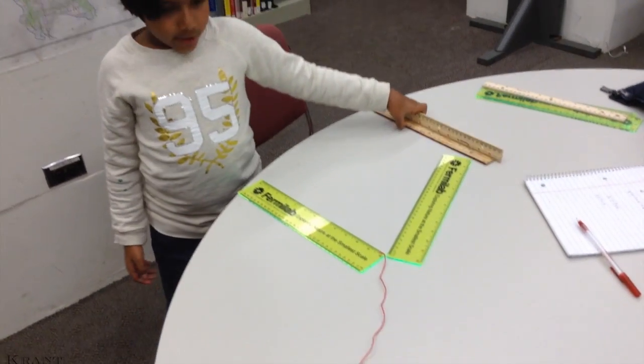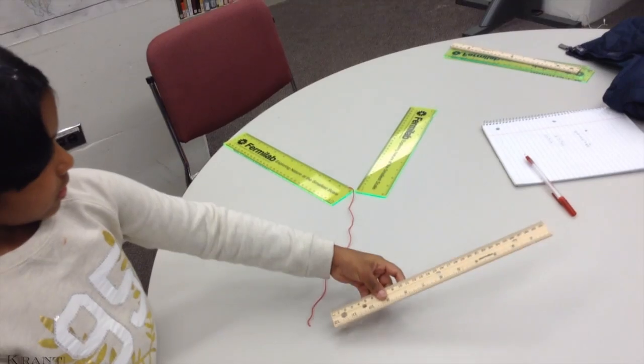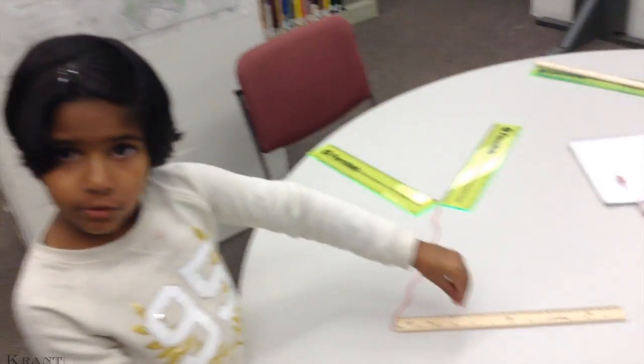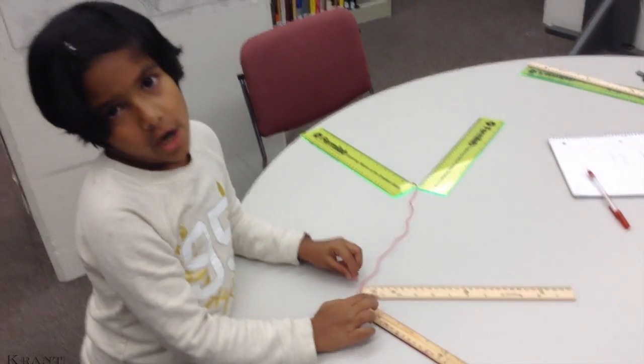W minus boson becomes electron. This is electron, and this is anti-neutrino.